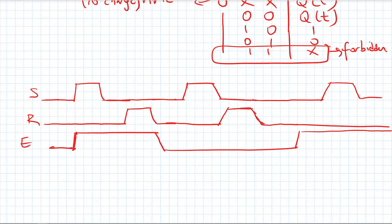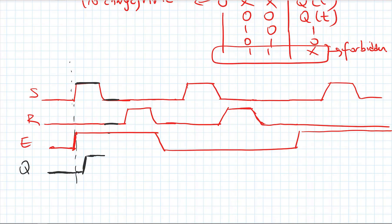Let's say initially Q is zero, so I will keep my zero until this point. Now at this point I have enable active and S becomes one during this period, so Q will become one. Then here I have S=0, R=0 with enable=1, so I will keep Q equal to one until this next point. At that point I have the reset signal, so my output will go to zero.